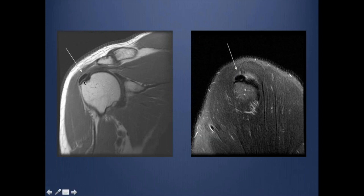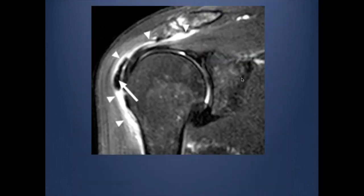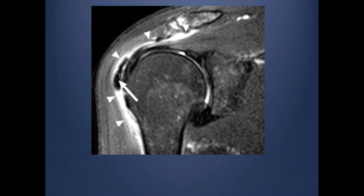Here you can see calcific tendinitis with not much reactive change. This is another patient with calcific tendinitis; however, there is a very large bursitis with significant reactive changes, and the calcification is slightly migrating into the bursa. Calcific tendinitis has formative and resorptive phases, and it is actually more painful in the resorptive phase. Even the content of the calcium differs between phases.